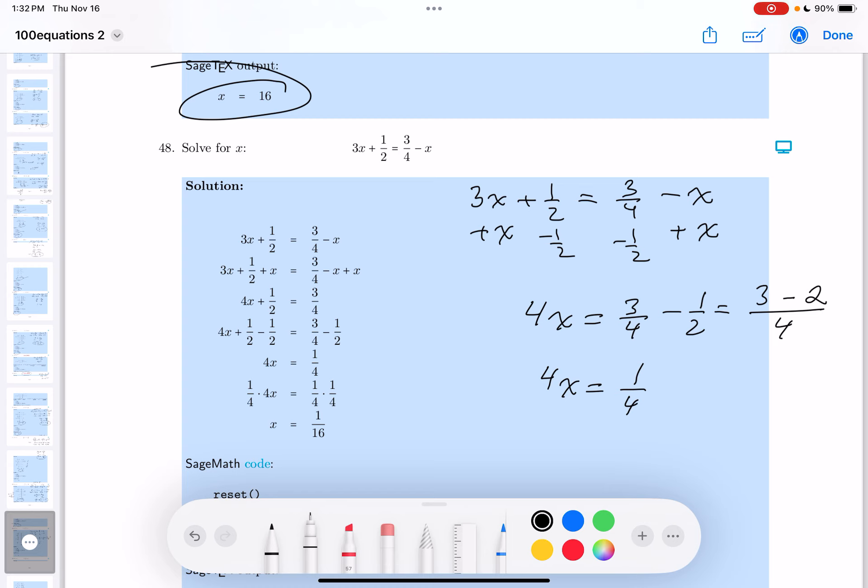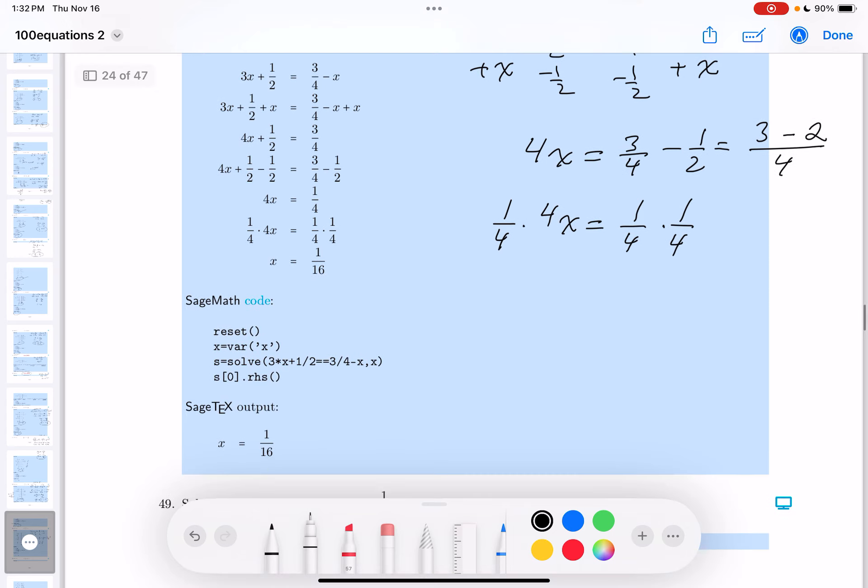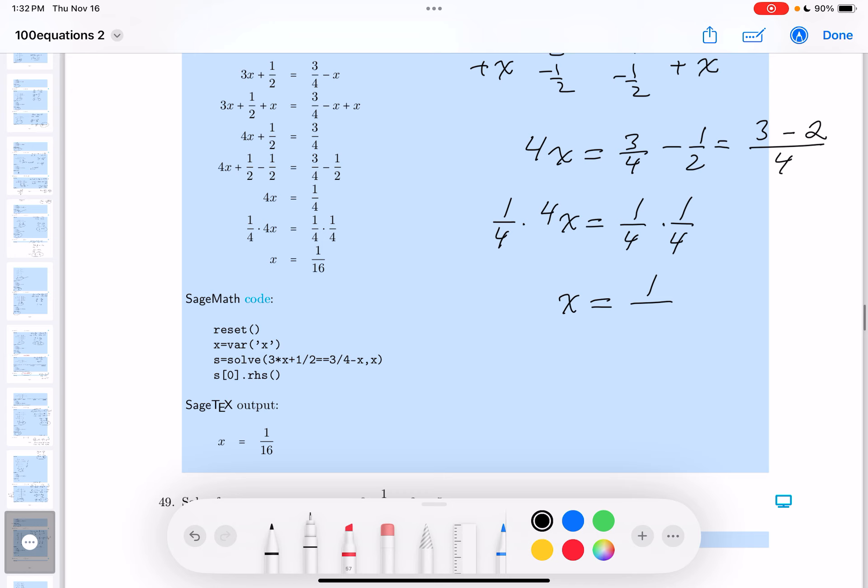Then what do you do? You either divide by 4 or multiply by 1/4. I'm going to multiply by 1/4 now. What do you get over there? You would get x equals, well, 1 times 1 is 1, 4 times 4 is 16. You get 1/16.